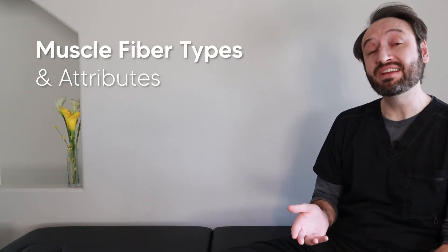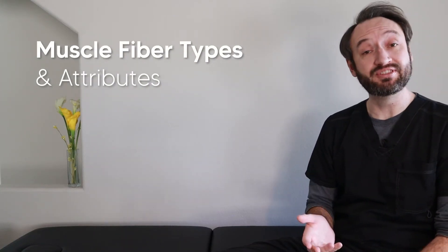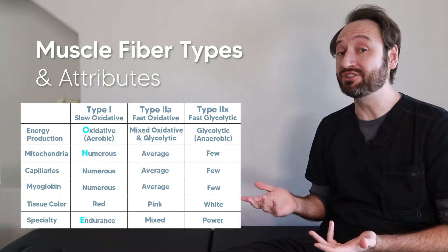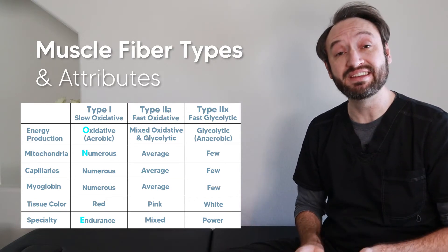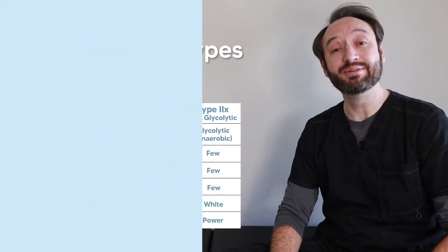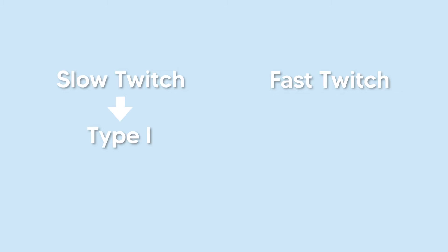Today we're going over muscle fibers and their attributes. There is potentially a lot to know here, but we're going to break it down and make it real easy. You've probably heard that we have slow twitch and fast twitch muscle fibers. In medical terms, slow twitch fibers are named Type 1, while fast twitch fibers are named Type 2.